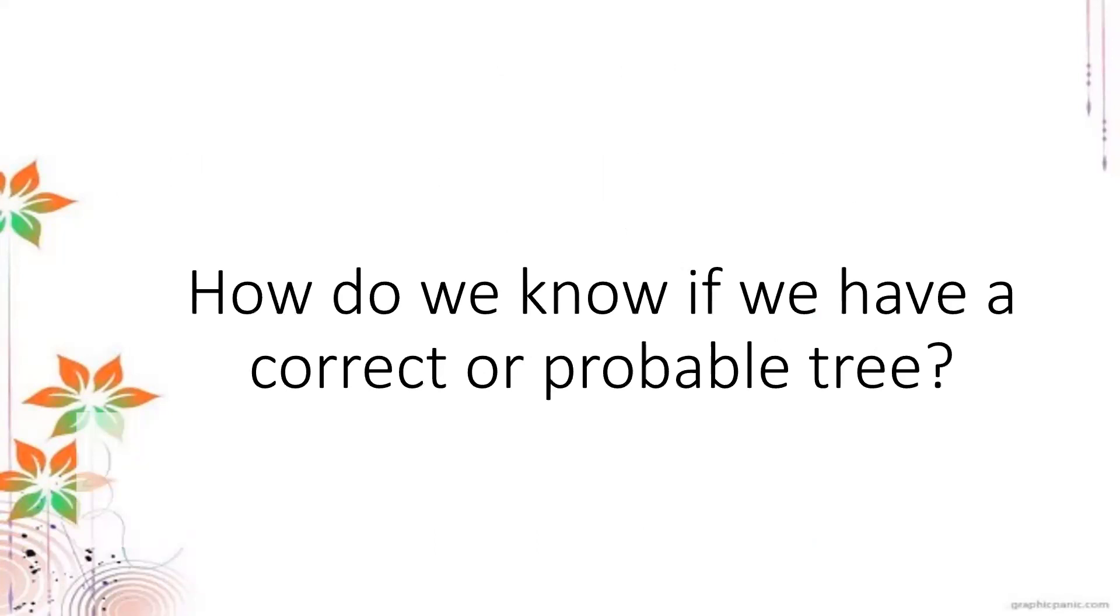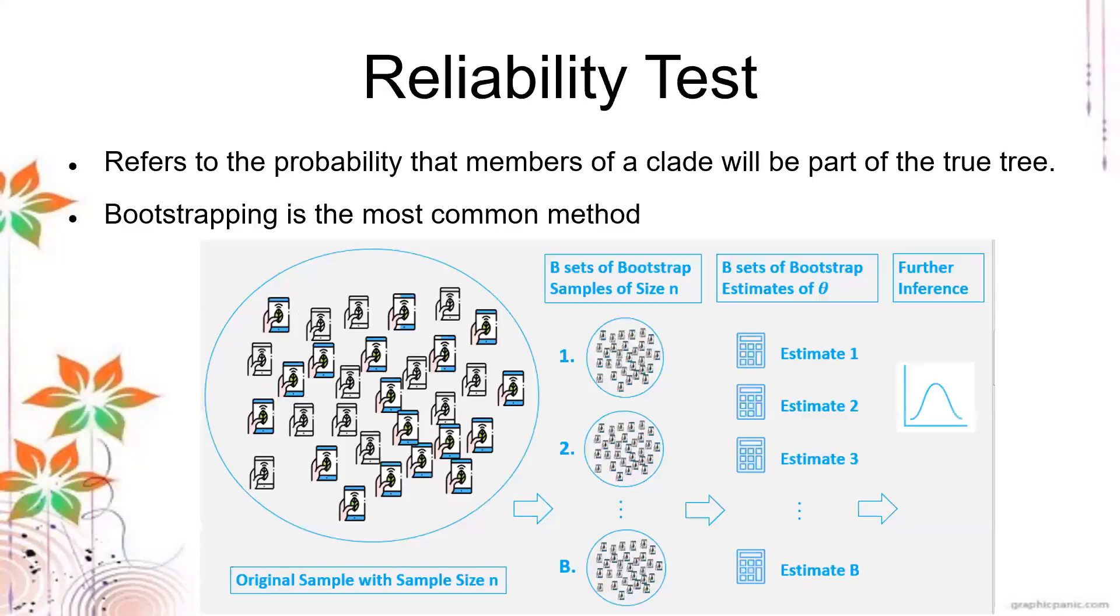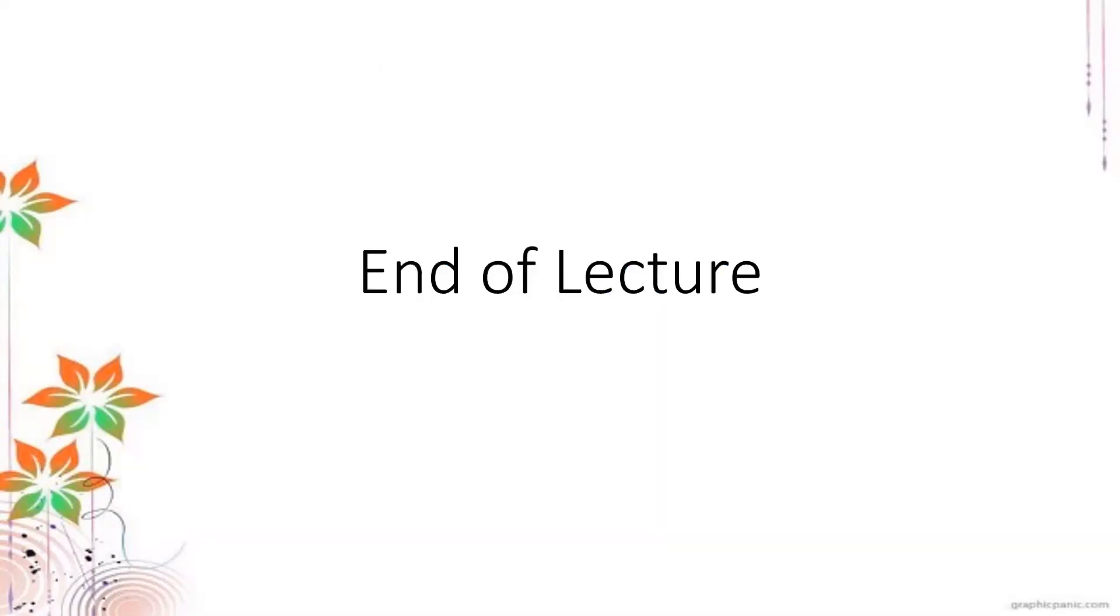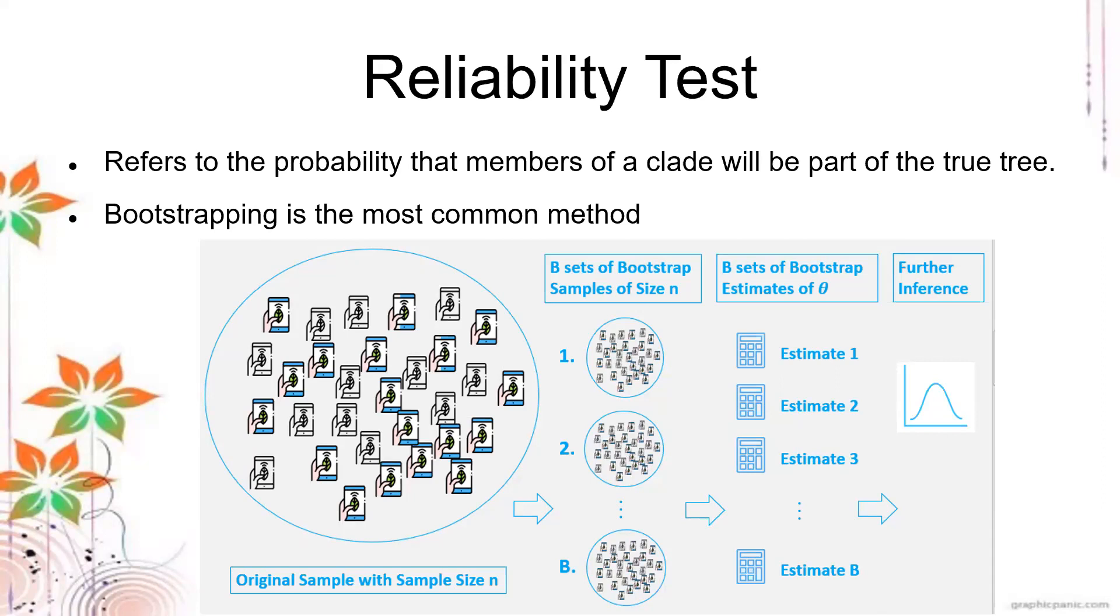All of these methods can be used to generate trees. But how do we know if we have a good one, a correct tree, or a good enough tree to be used as an inference? Are we inferring a proper tree? We have reliability tests. It refers to the probability that members of a clade will be part of a true tree. The most common to use is bootstrapping. You do bootstrapping tests to estimate the reliability of the generated tree that you have. That is one test in order to do that.